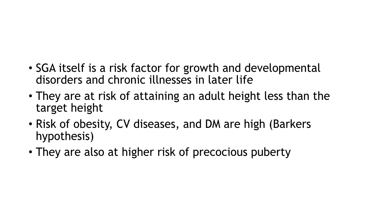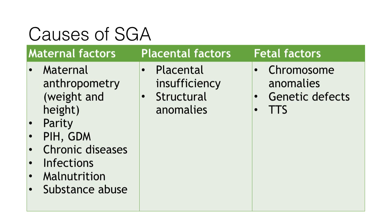Now we will come to the causes of small for gestational age birth. The causes can be broadly classified into maternal factors, placental factors, and fetal factors. One of the major determinants of maternal factors is maternal anthropometry, that is weight and height of the mother, parity, illnesses like pregnancy-induced hypertension or gestational diabetes mellitus, chronic diseases of the mother, infections, malnutrition, substance abuse, and passive smoking.